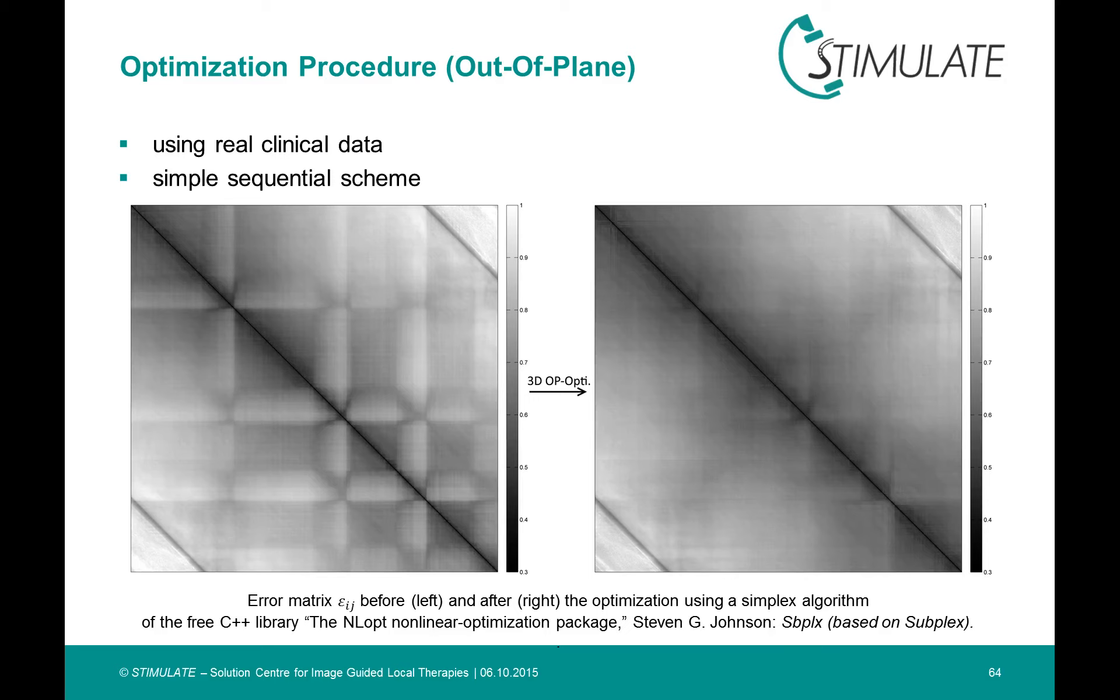You can see the consistency measure matrix, which stands for the consistency values for each combination of projections. Left before the optimization and on the right after the optimization. You can clearly appreciate that there are certain angle intervals with an increase of the consistency measure.